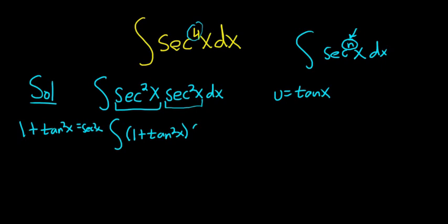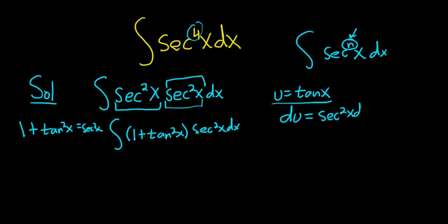And then you still have this secant squared here. So whenever you have secant to the fourth, secant to the sixth, secant to the eighth, just save a secant squared, then convert the rest to tangents, and then u is your tangent. Now we'll compute du — the derivative of tangent is secant squared x dx, and that's precisely this piece here.